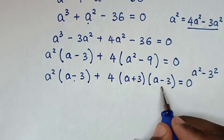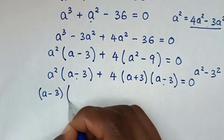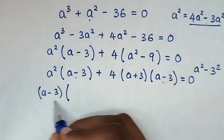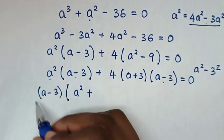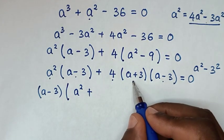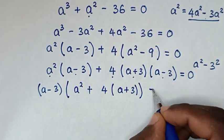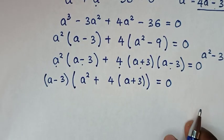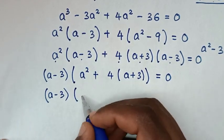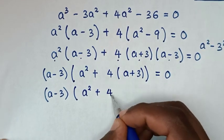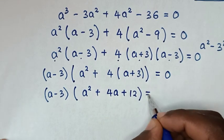In here, (a minus 3) is common, so we take (a minus 3) out of the bracket. Dividing through gives a squared plus 4 times (a plus 3), which is 4(a plus 3). In the next step, expanding gives (a minus 3)(a squared plus 4a plus 12) is equal to 0.